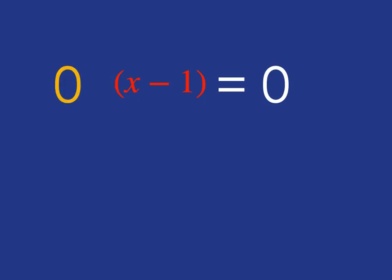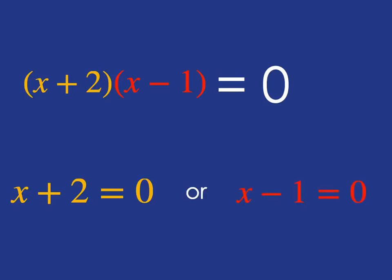Well, either that must be a zero or that must be a zero or, of course, both of them must be a zero. So we can write that. Either x plus two must be zero or x minus one must be zero. And if x plus two is zero, that's an easy equation to solve. X is minus two. Or if x minus one is zero, easy equation to solve. X is one.